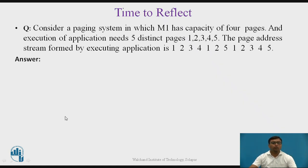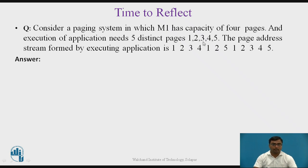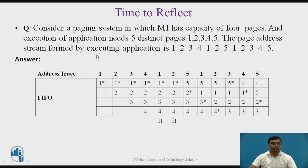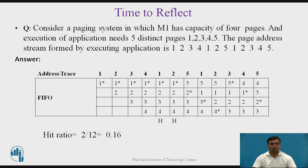Time to reflect. Read the question and pause the video and write the answer. The question is: consider a paging system in which M1 has a capacity of four pages, and execution of the application needs pages 1, 2, 3, 4, 5 accessed in this stream. The cache memory has four lines, so four blocks of main memory can be held at a time. The answer shows four cache lines with the same FIFO method applied. The hit ratio is 2 hits out of 12 total accesses, giving a hit ratio of 0.16.